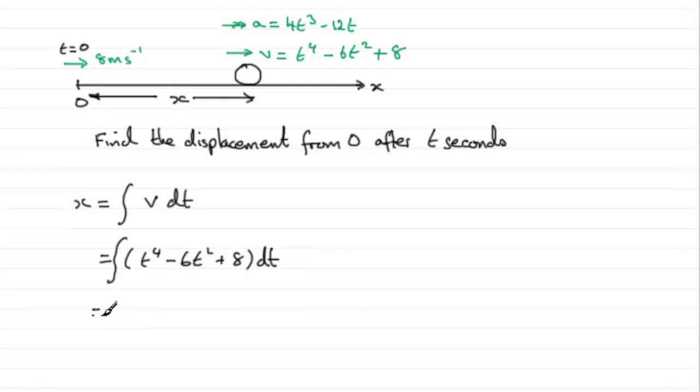And again, the usual way for terms like this, add 1 to the power and divide by the new power. So integral of t to the 4 is going to be t to the power 5 over 5, minus 6t squared is going to be minus 6t cubed over 3, and then for the constant 8, that becomes simply 8t. And then you've got the constant of integration, let's say plus c.